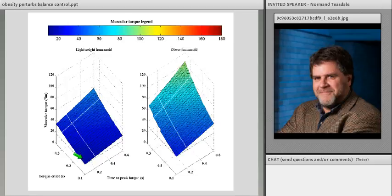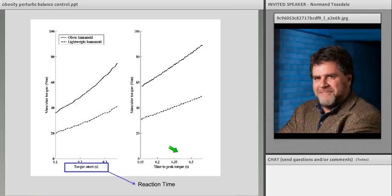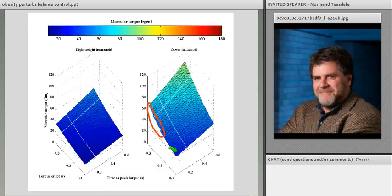So what we see when we compare the normal model with the obese model is that the torque values to stabilize the body are much higher. And as we move toward the torque onset or the time to peak torque axis, we see that the torque required to stabilize the body increases much more for the obese humanoid. In this actual figure, I have also this area, which I want to show, which is basically when you wait too long. Basically, what it shows is that if you wait too long, there aren't any torque values that are capable of stabilizing the body.